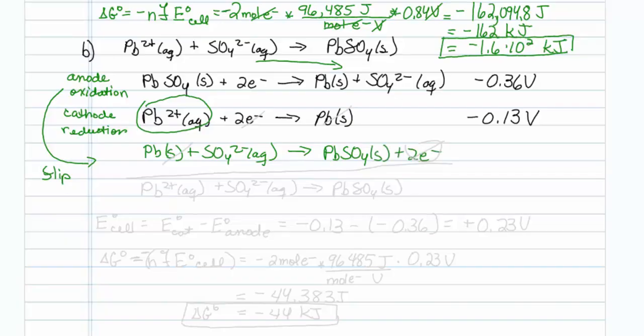Let me add these two reactions. And oh good. My lead solids go away. My two electrons go away. So I'm left with the reaction of interest. Lead 2 plus plus sulfate 2 minus going to lead sulfate solid.